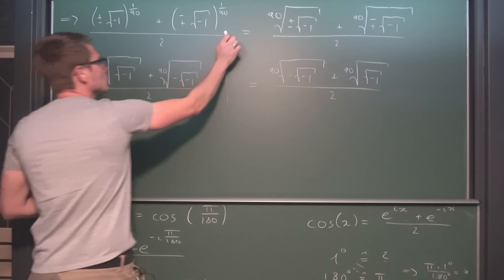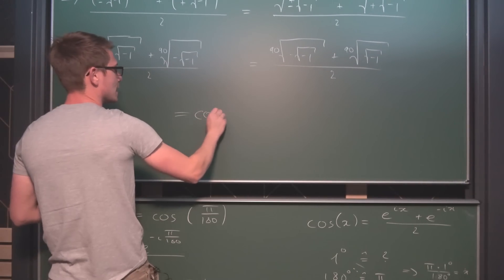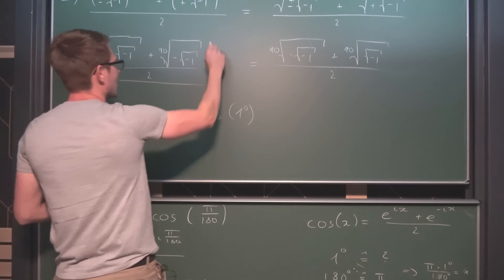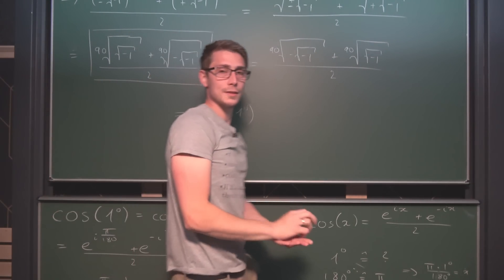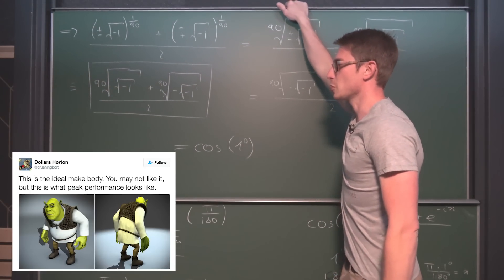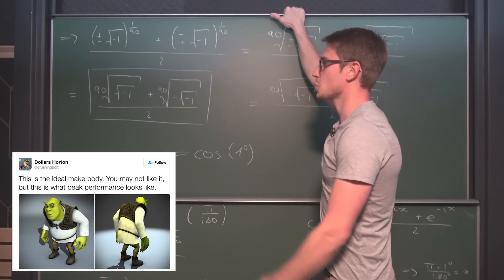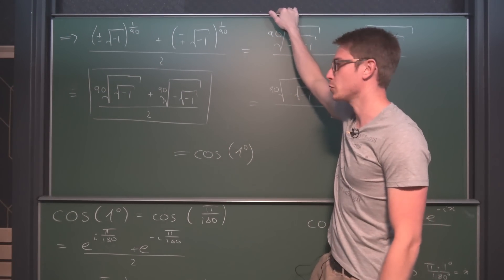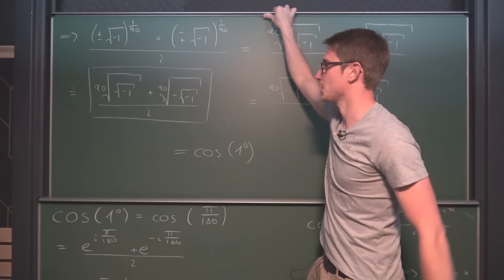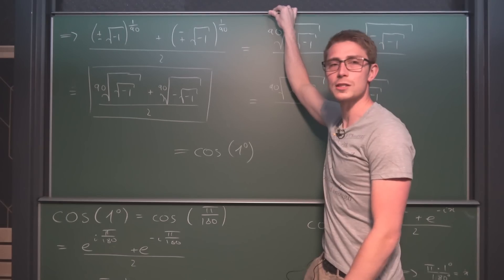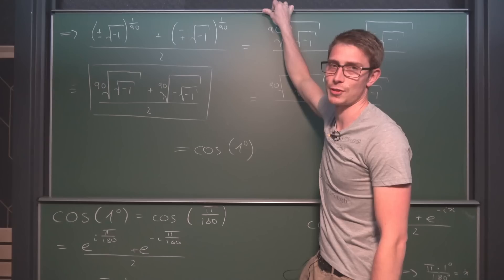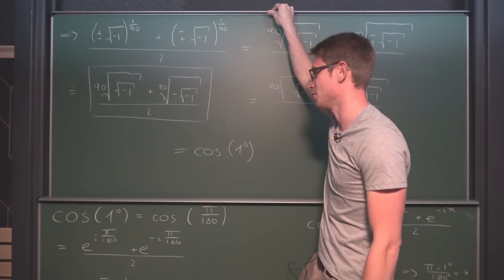So this right here is the closed expression for cosine of one degree. Like it or not, this is what it looks like. It's a fun thing to play around with and it's rather click-baity — that's why I made the video.